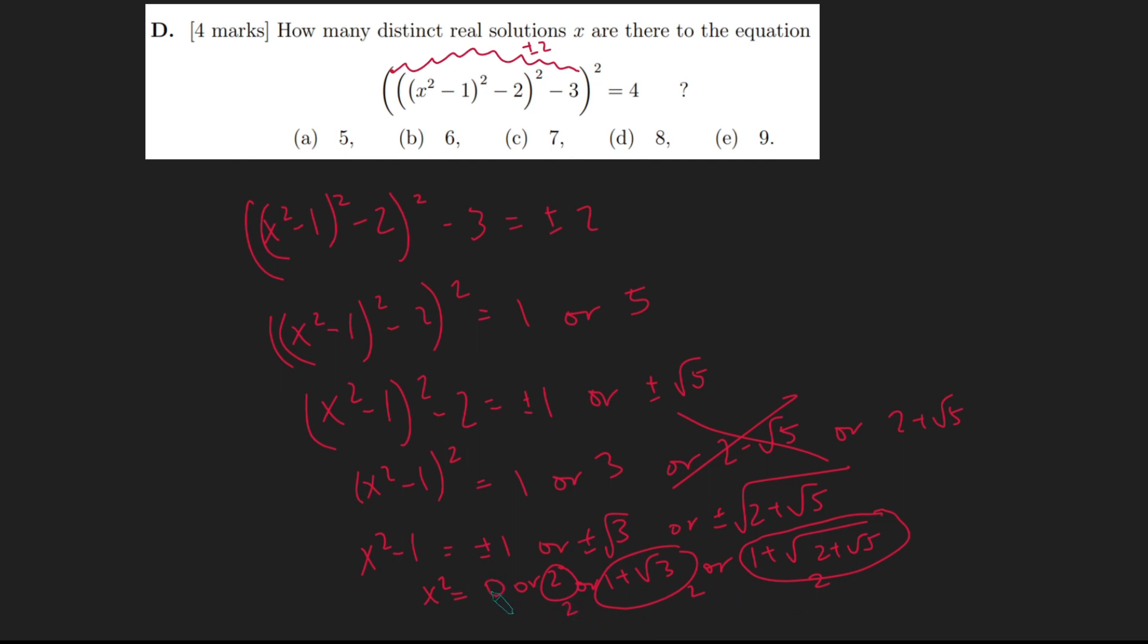And this one only has one real solution, x equals zero. So in total, I get one plus two plus two plus two, which is seven real solutions to this equation.